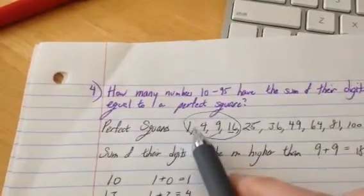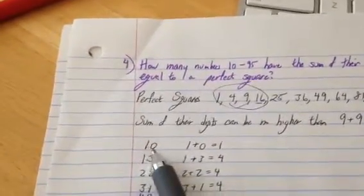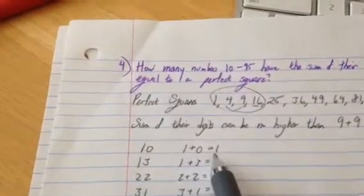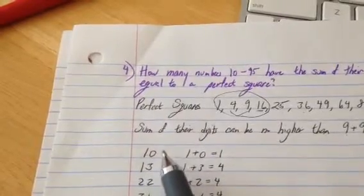So first I'm going to say, okay, well, what if I want to have their sums add up to 1? So maybe I could have a 1 and a 0, and that works. And I can't do any more because it's going to be higher than 1.